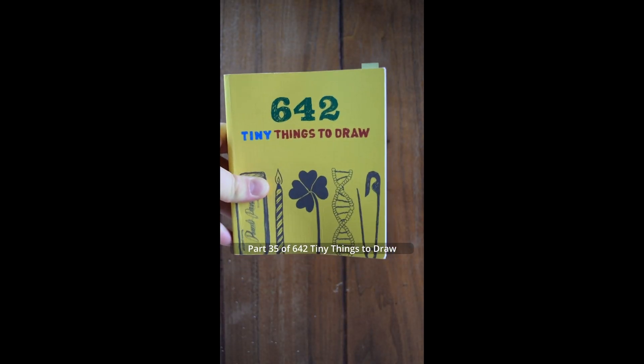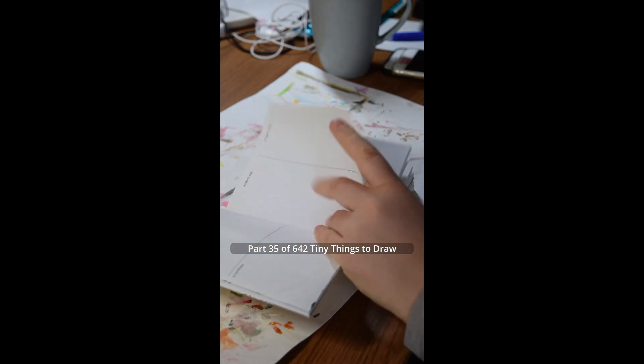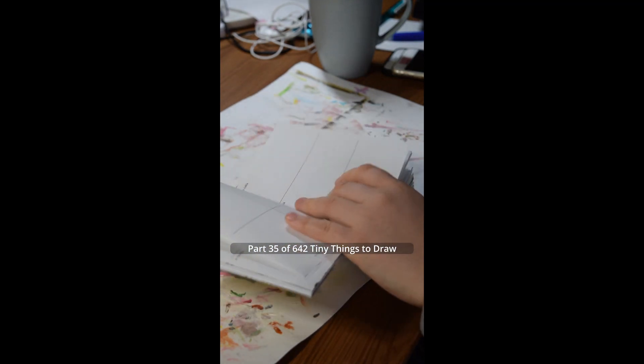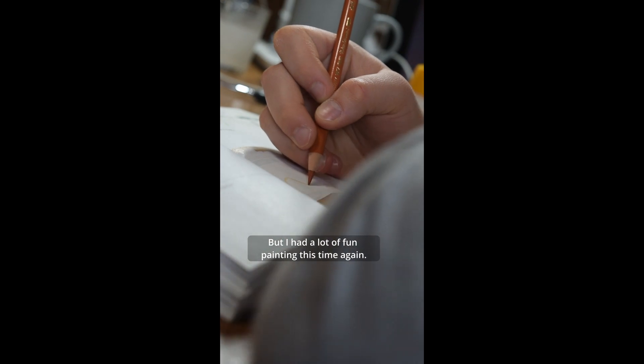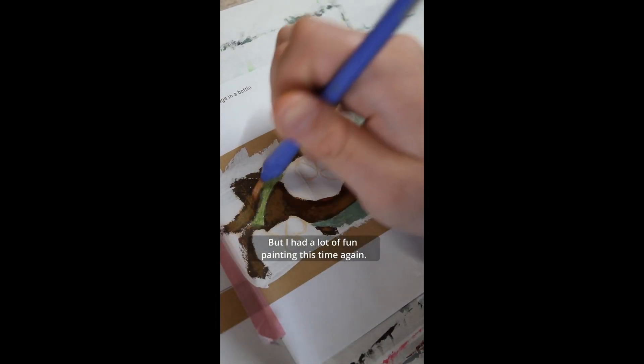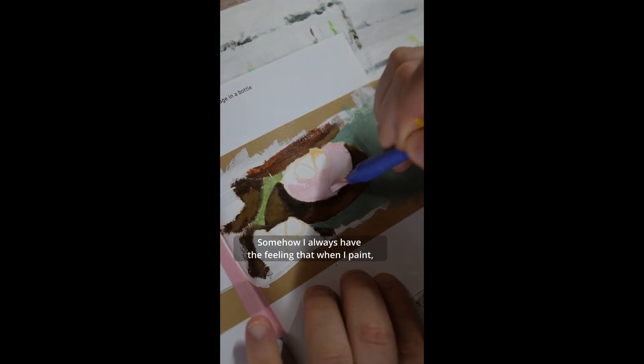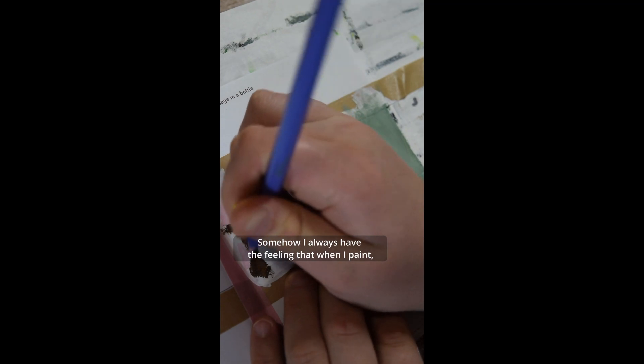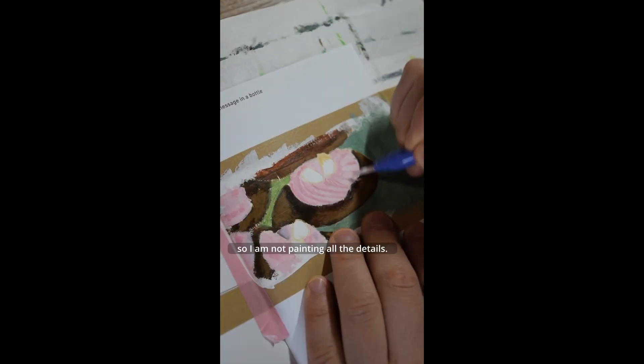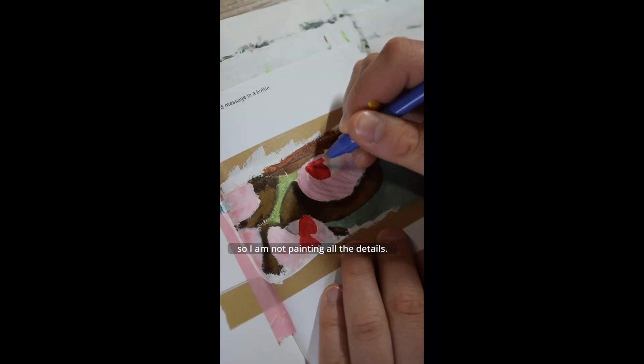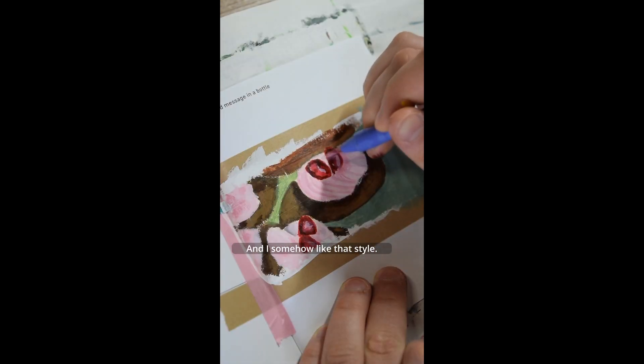Part 35 of 642 tiny things to draw. Today I will paint an emuse bush. I don't know if the pronunciation is right, but I had a lot of fun painting this time again. Somehow I always have the feeling that when I paint, I'm simplifying my reference photo, so I'm not painting all the details and I somehow like that style.